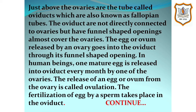We will continue with the female reproductive system. Just above the ovaries are the tubes called oviducts. The oviducts are also directly connected to ovaries but have a funnel shaped opening which almost covers the ovaries. The egg or ovum released by an ovary goes into the oviduct through its funnel shaped opening. In human beings, one mature egg is released into the oviduct every month by one of the ovaries. The release of an egg or ovum from the ovary is called ovulation. The fertilization of an egg by a sperm takes place in the oviduct.